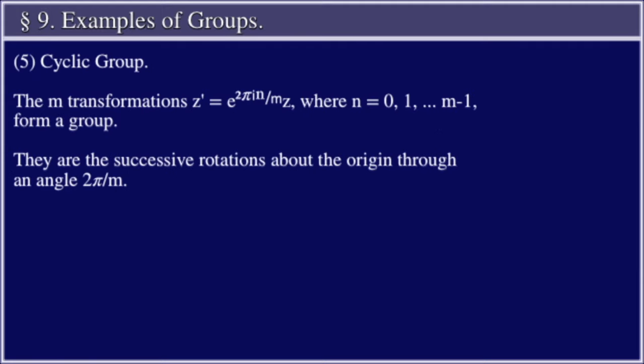5. Cyclic Group. The m transformations z' = e^(2πin/m) × z, for n = 0, 1, ..., m - 1, form a group. They are the successive rotations about the origin through an angle 2π/m.